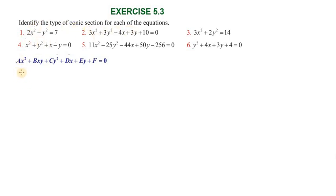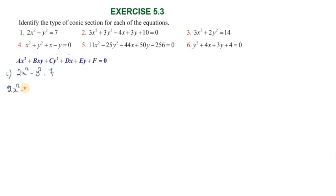The first question is 2x squared minus y squared equal to 7. Rewriting: 2x squared minus y squared minus 7 equal to 0.